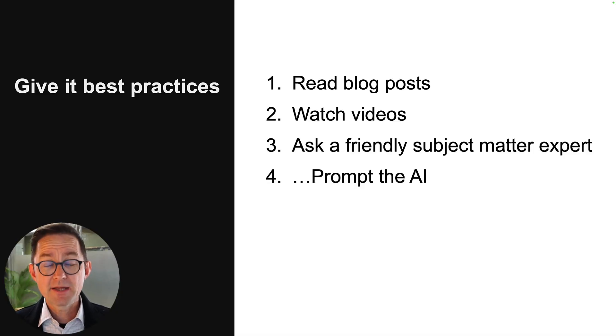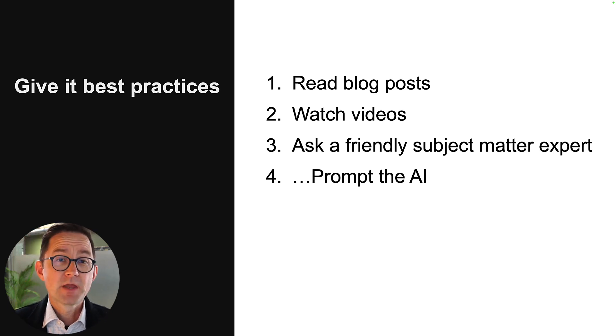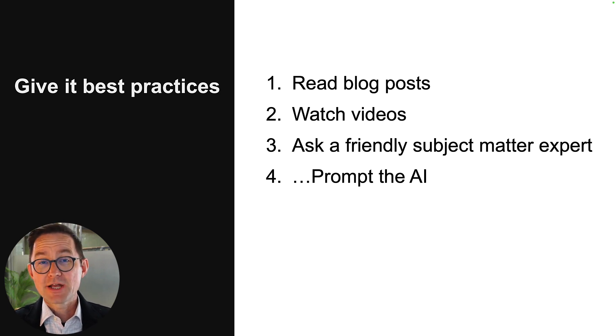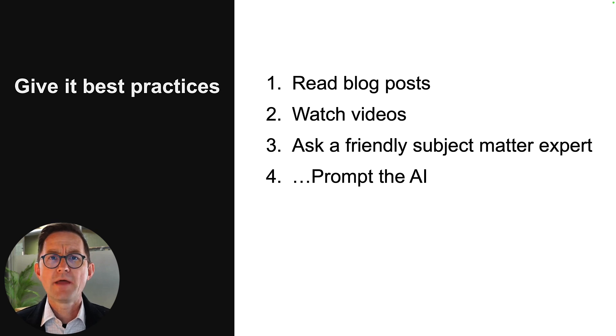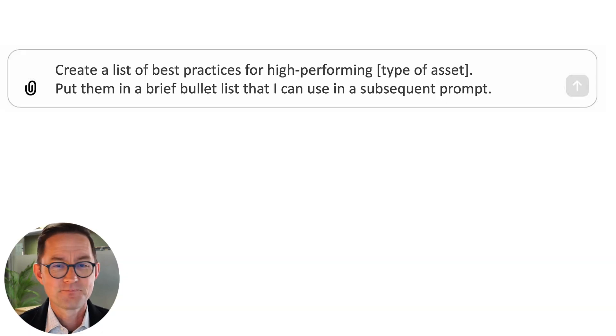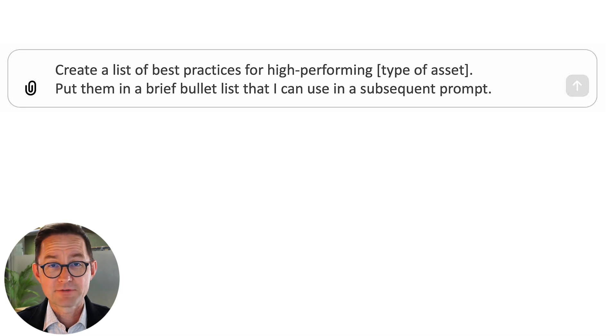Best practices is the third part of the prompt. Where do you get best practices? I could still just do the lazy prompt, but I actually want to learn a little bit in this process — I'm not trying to abdicate my job. I do want to get a bit smarter and learn about the thing. So take a few minutes and go read some blogs, go watch some videos, go reach out to a friendly expert and ask for some input. Or you can prompt the AI to give you a short list of best practices for the asset — that will at least give you the chance to review it, add to it, or change it. Very simple prompt: 'Create a list of best practices for high-performing [whatever type of asset]. Put them in a brief bullet list that I can use in a subsequent prompt.'